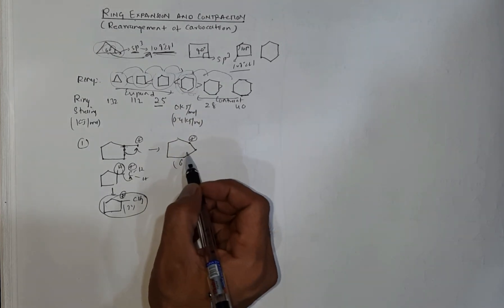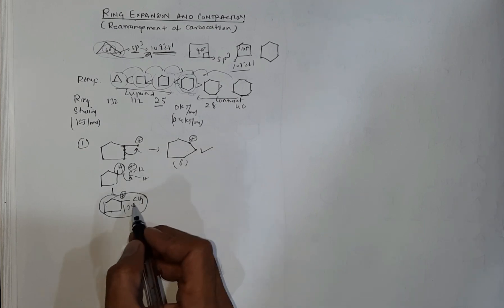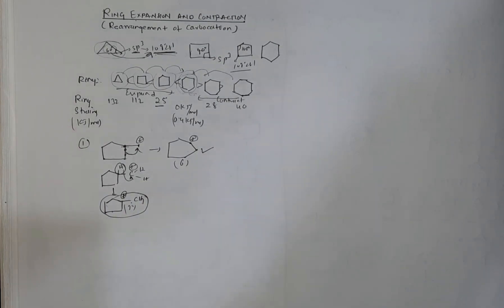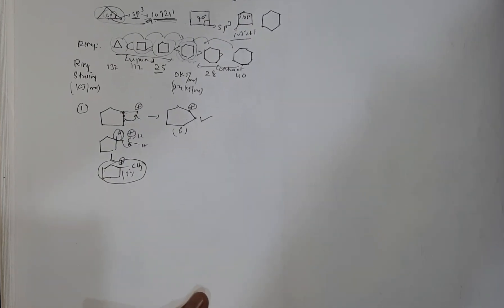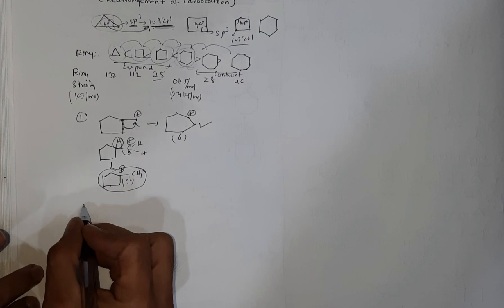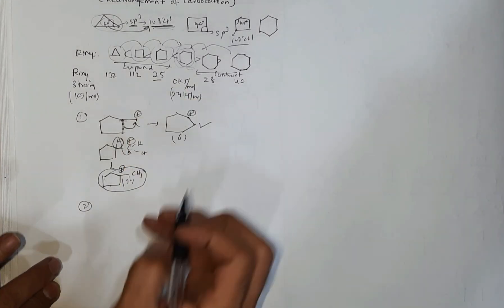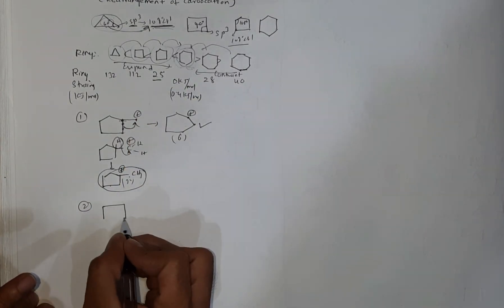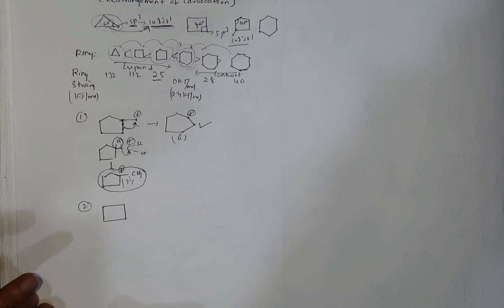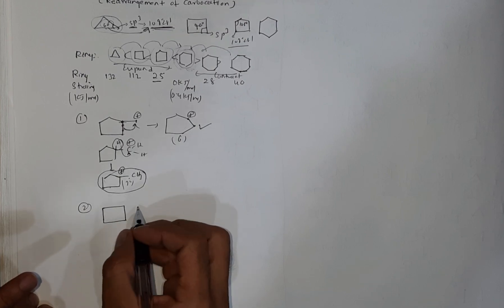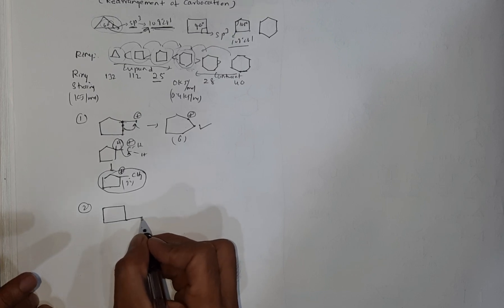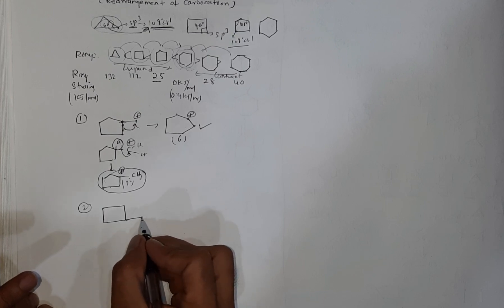This ring expansion gives a more stable form — the ring expands to six carbons, giving less strain and a more stable carbocation. This is called ring expansion. We can also see ring expansion for cyclobutane: cyclobutane carbocation with a positive charge on an exocyclic carbon attached to the cyclobutane ring.